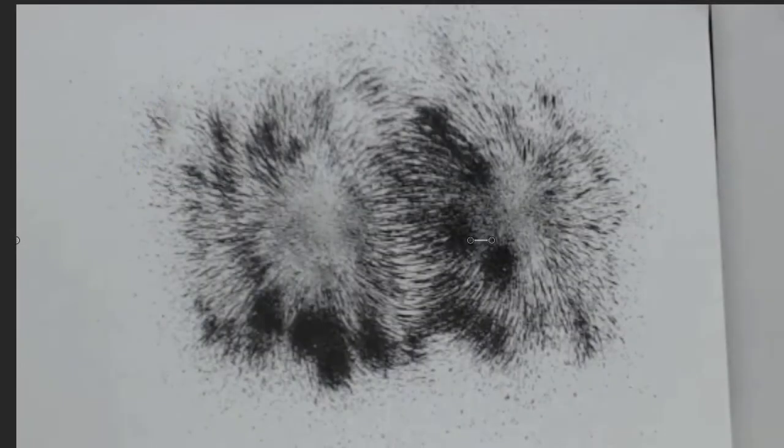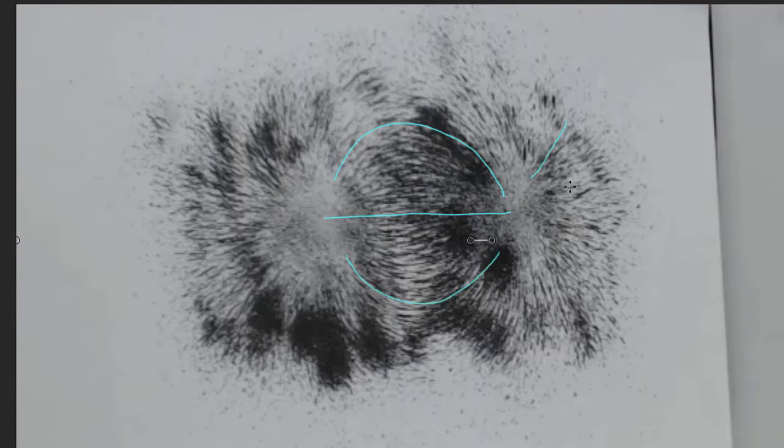We know what the magnetic field around a magnet looks like from previous experiments. But magnetic fields are a type of vector field. And iron filings don't show the direction of the magnetic field. So we'll use a compass to find the direction of the magnetic field around a magnet.